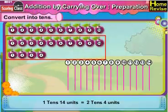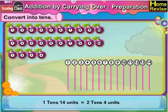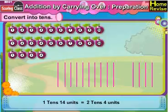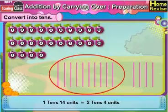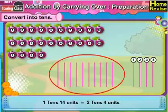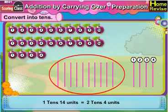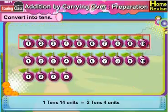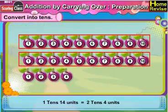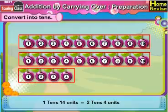From 14 units, we can make a group of 10 lines and the remaining would be 4. So 1 tenth plus 1 tenth is 2 tenths. So it is 2 tenths, 4 units.